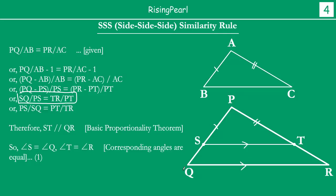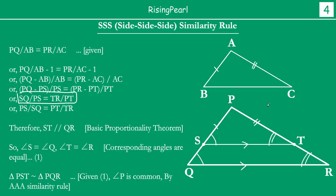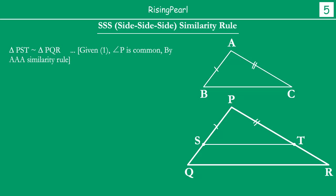So we have ST parallel to QR. If these two lines are parallel and PQ is a transversal, then the corresponding angles are equal — this angle becomes equal to angle Q, and this angle becomes equal to angle R. Therefore, small triangle PST is similar to big triangle PQR by AA similarity rule.